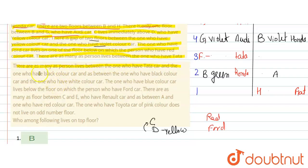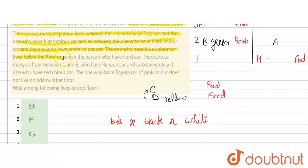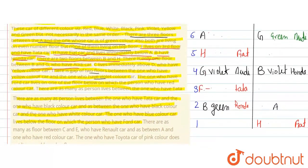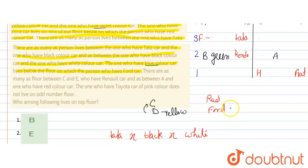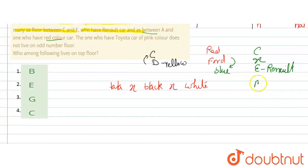The next condition says: there are as many persons between the one who has the Tata car and the one who has the black car, as between the one who has the black car and the one who has the white car. So Tata, black, and white are equidistant. Also, the one who has the blue color car lives below the floor of the person who has the Ford car.